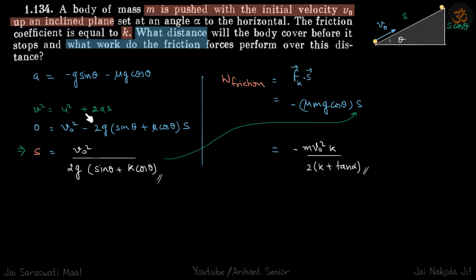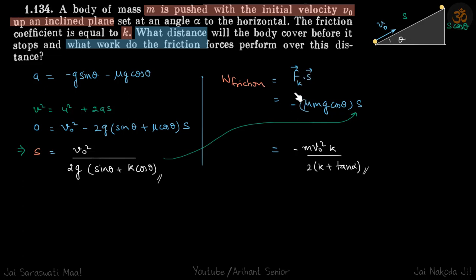Solving this we get the value of s. Now, the work done by friction is simply the frictional force dot displaced. The frictional force acts backwards and the displacement is upwards, so the dot product is f times s times cos of 180, which equals negative f times s. The frictional force is mu mg cos theta, so substituting the value of s and simplifying gives the final answer.